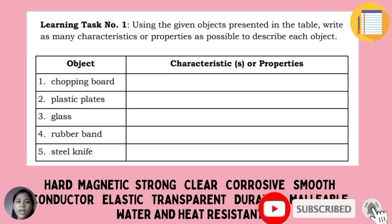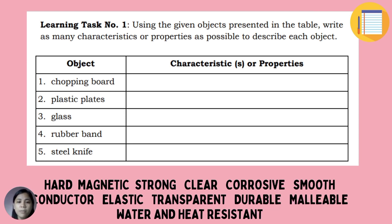For Learning Task 1, using the given objects presented in the table, write as many characteristics or properties as possible to describe each object. Objects such as chopping board, plastic plates, glass, rubber band, and steel knife. You may write your answer in the column of characteristics or properties. Some example properties to choose from: hard, magnetic, strong, clear, corrosive, smooth, conductor, elastic, transparent, durable, malleable, water and heat resistance.